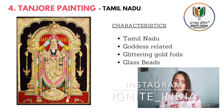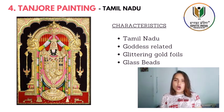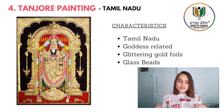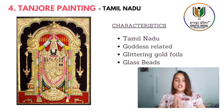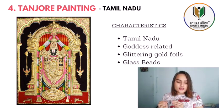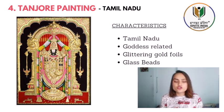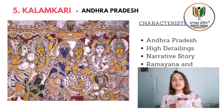The next is Tanjore painting, which is from Tamil Nadu. Its characteristics: it also features gods and goddesses, and you can see glittering gold foils and glass beads. I think this is a different thing from Mysore painting — you don't need to get confused because you can identify both of them separately.